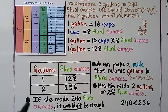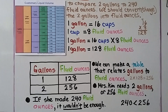If she only made 240 fluid ounces, that would not be enough. 240 is less than 256. So no — if she needs two gallons of iced tea and she only made 240 fluid ounces, she did not make enough.